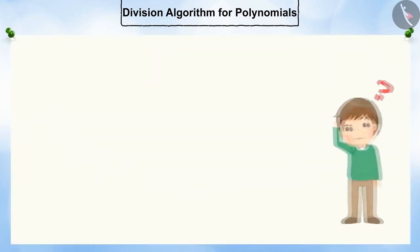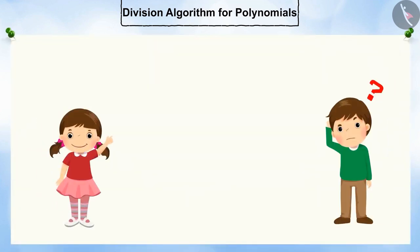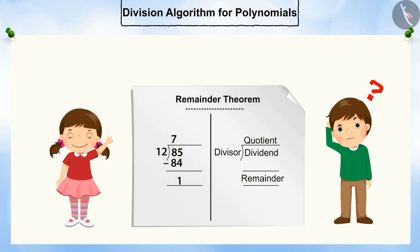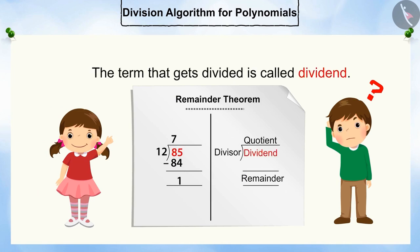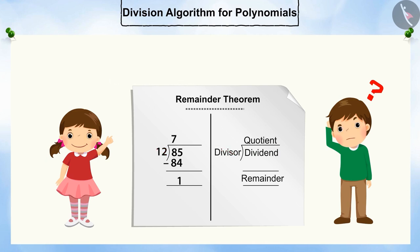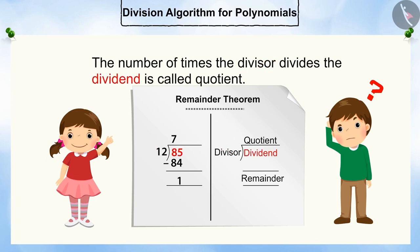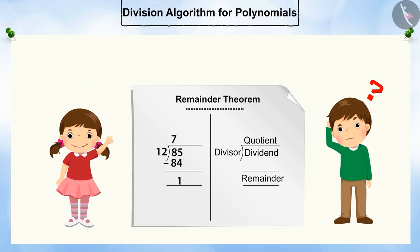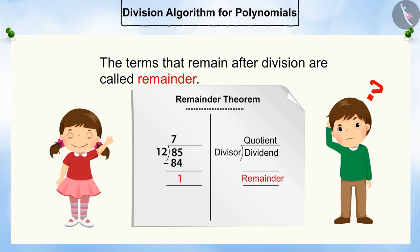After keeping the t-shirts in the wardrobe, Shyam goes to study with Pooja, who is studying the division method. Pooja tells Shyam that the term that gets divided is called dividend. And the term by which the dividend gets divided is called divisor. The number of times the divisor divides the dividend is called quotient. The term that remains after division is called remainder.